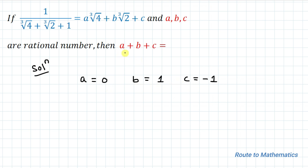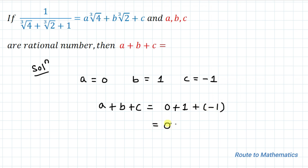We need to find the sum of a plus b plus c. So a plus b plus c equals 0 plus 1 plus (minus 1), which equals 0 plus 1 minus 1. The 1 and minus 1 cancel out. Our answer is 0. I hope you liked this video and now have clarity on how to solve this type of question. Please give it a thumbs up and subscribe to my channel. Thank you.